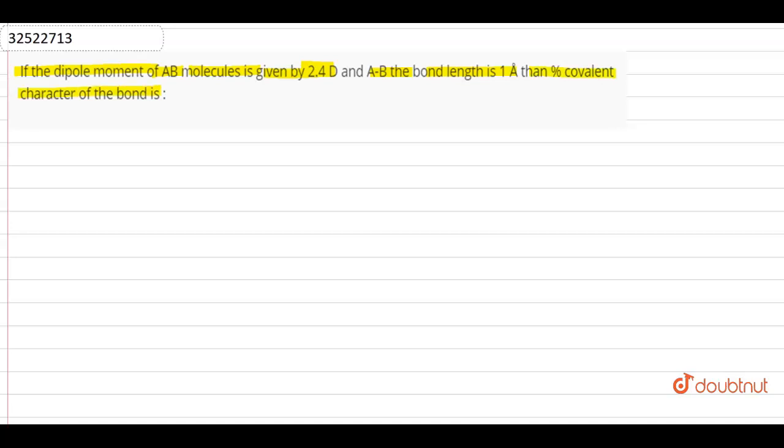What is basically given? Dipole moment of AB. This dipole moment is the observed dipole moment. Let's say I will represent it as mu observed. And this is equal to 2.4 debye.